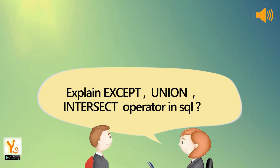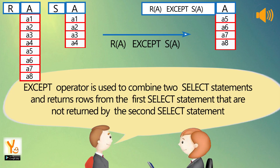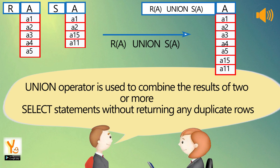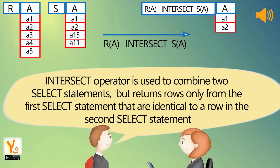Explain the EXCEPT, UNION, and INTERSECT operators in SQL. The EXCEPT operator is used to combine two SELECT statements and return rows from the first SELECT statement that are not returned by the second SELECT statement. The INTERSECT operator is used to combine two SELECT statements but returns only rows that are identical in both SELECT statements.